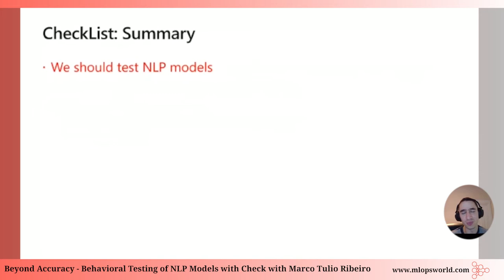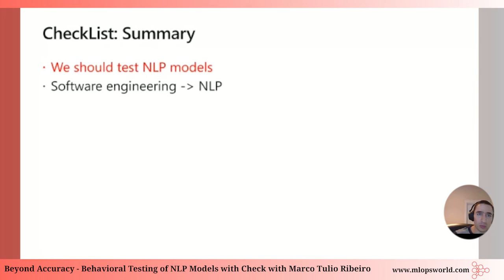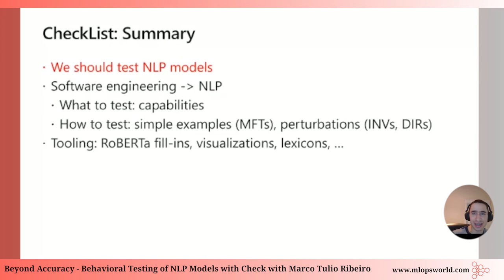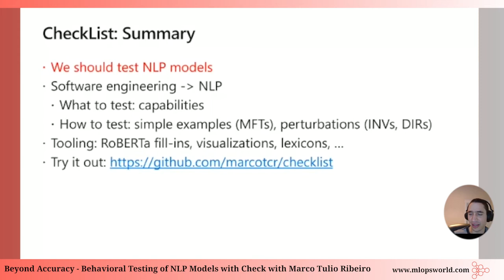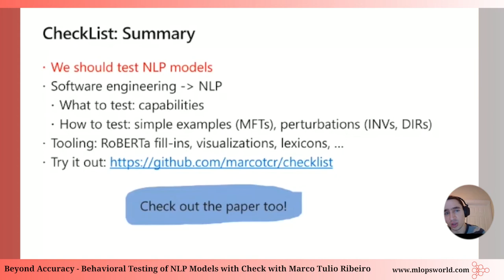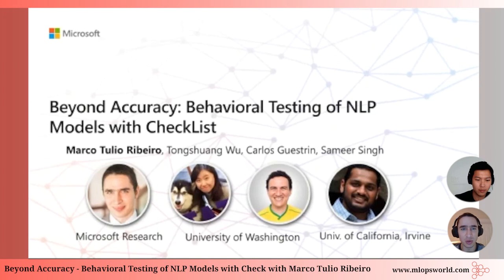In summary, the one takeaway is: test your NLP models. Don't just rely on accuracy. Whether in research or using a product, you should test your model just like you test software — it's not that much work and it's significantly better than just using accuracy. We give you a whole process: what to test (a list of capabilities), how to test (different test types including perturbations), and tooling (templates, fill-ins, visualizations, lexicons). Try it out — the open-source tool is available, and the paper has much more detail.